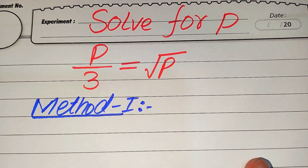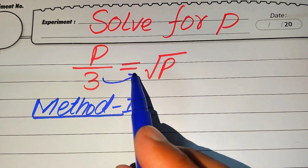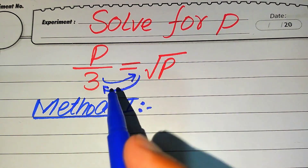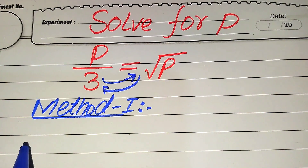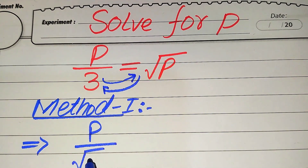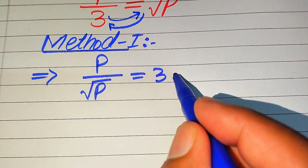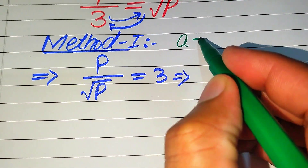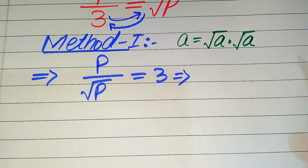In the first method, we interchange the 3 with the square root of p. We move the square root of p to the left hand side in the place of 3, and we move 3 to the right hand side. So it becomes p divided by square root of p is equals to 3. We know that any value a can be written as square root of a multiplied by square root of a.